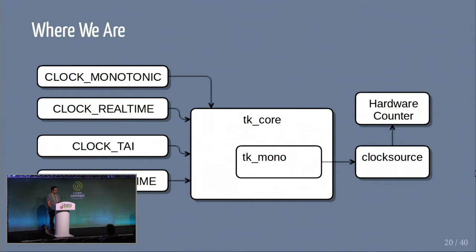Overall, we have monotonic, real-time, and all these different clocks going into the struct TK_core, which reads the monotonic base, which reads the clock source, which finally reads the hardware counter.